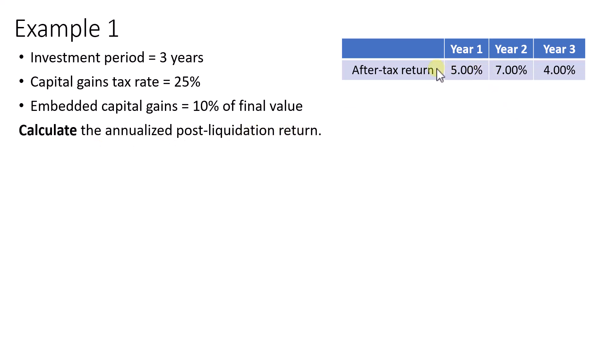First we need to calculate the final value at the end of year three. If you invested one dollar at the beginning of the year, by the end of year three you would have 1.16844 if you compound the returns over the three years.